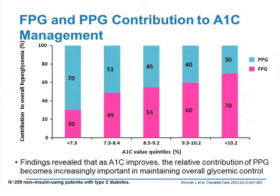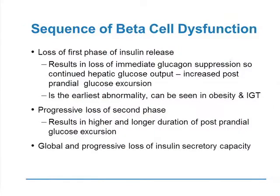This is a classic study by Monnier basically showing that the contribution to HbA1c is different at different HbA1c levels. Below 7%, about 30% is fasting and about 70% is based on glucose excursions. At 10%, 70% of the contribution comes from fasting and only 30% from postprandials.